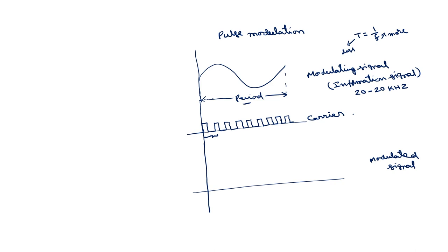There are many ways to obtain the modulated signal. Either you can change the amplitude of the carrier in accordance with the modulating signal — that is called pulse amplitude modulation, PAM — or you can change the width of the carrier with respect to the modulating signal, which is called pulse width modulation, PWM. Here we are interested in PWM because we can generate this PWM using the 555 timer.